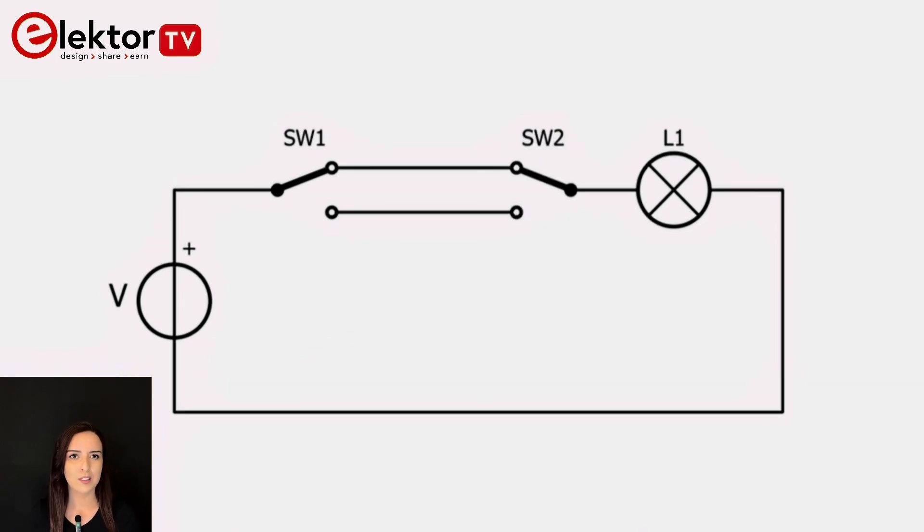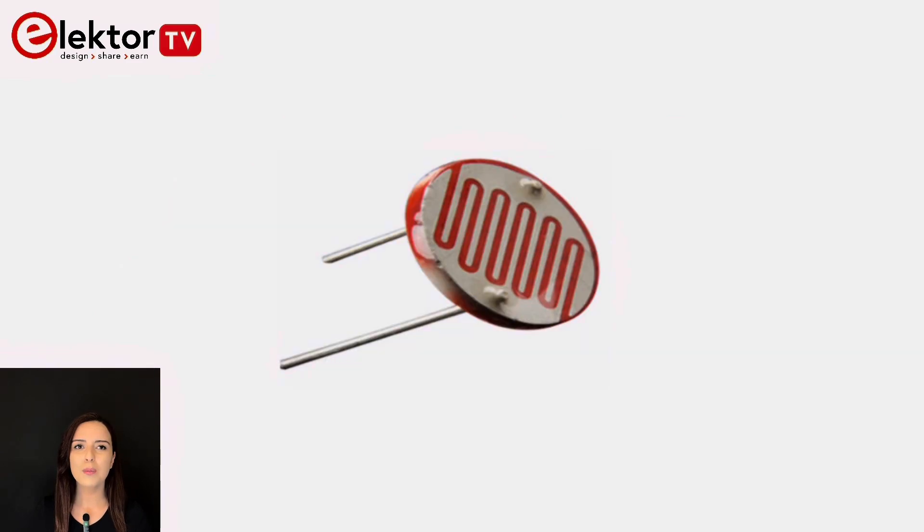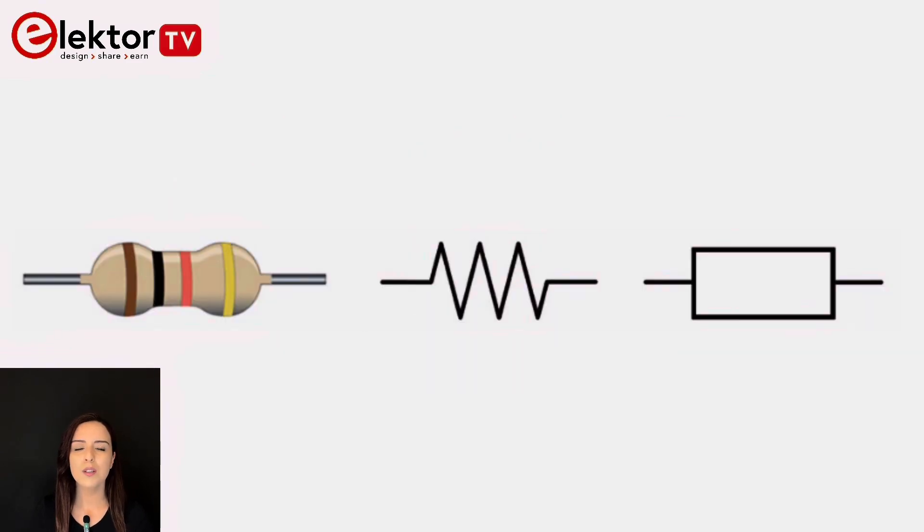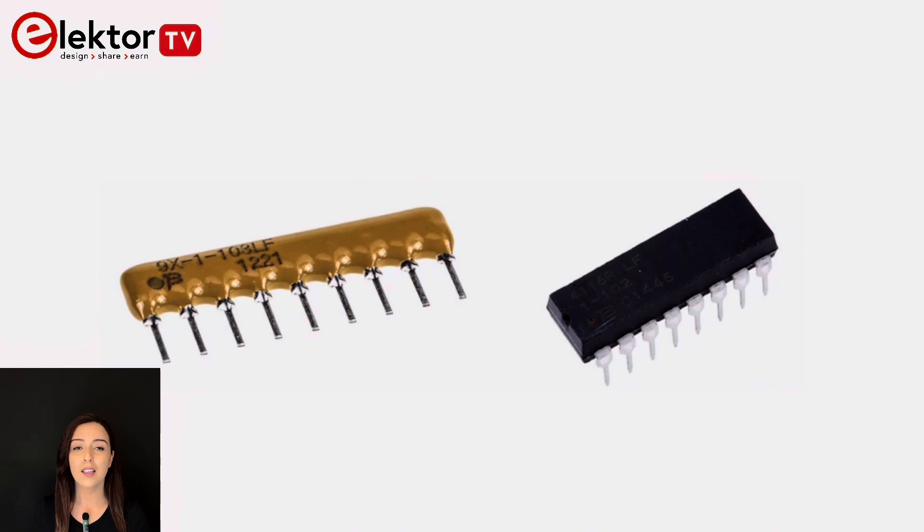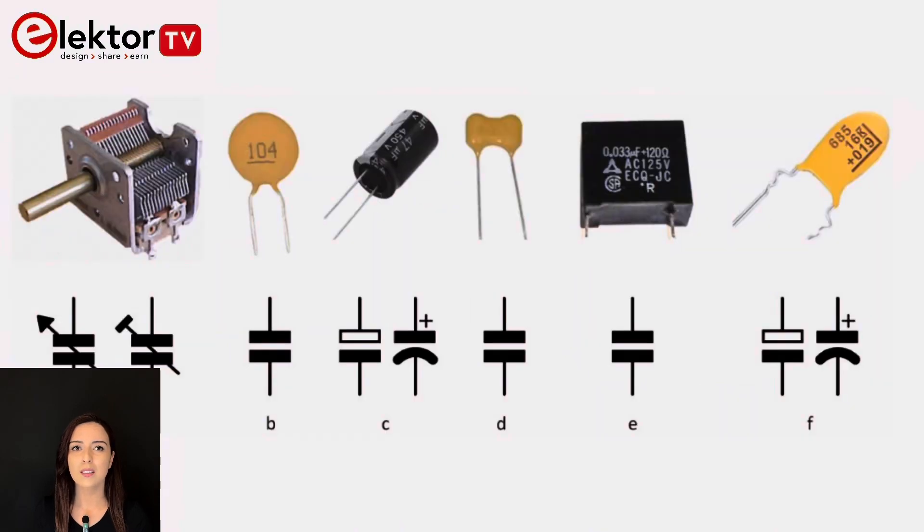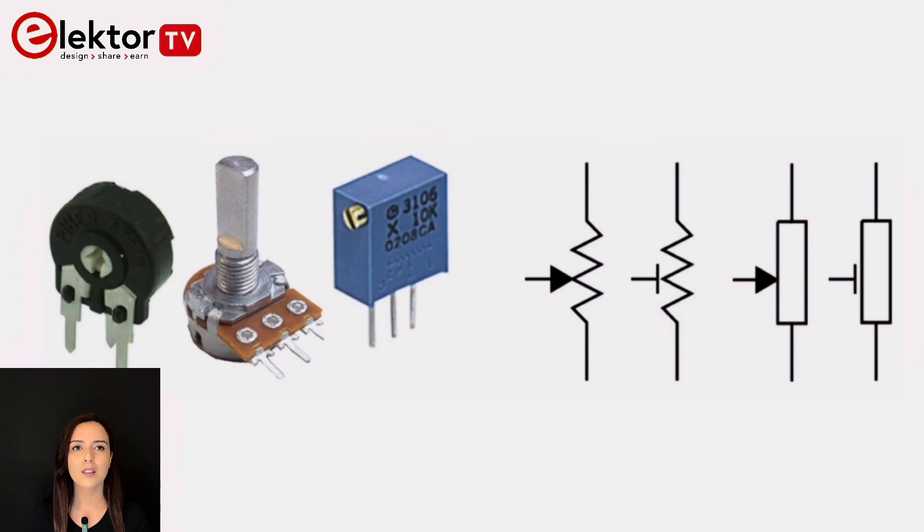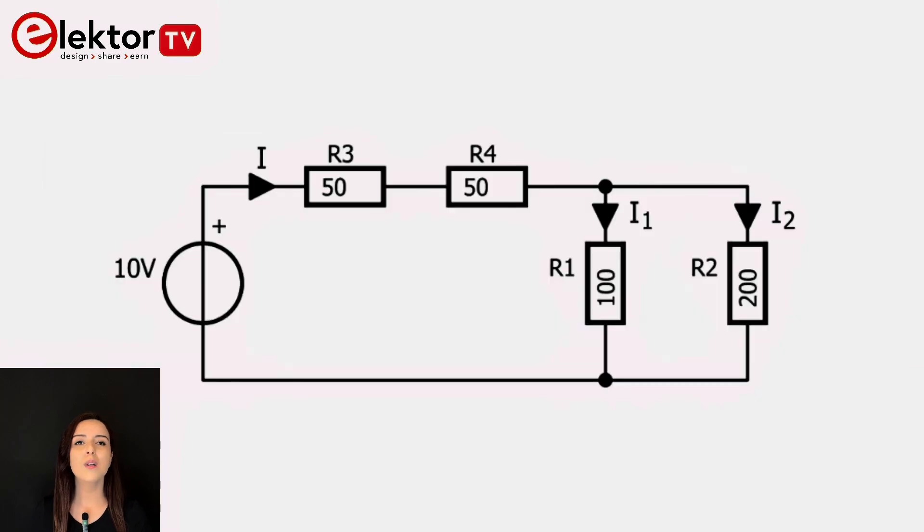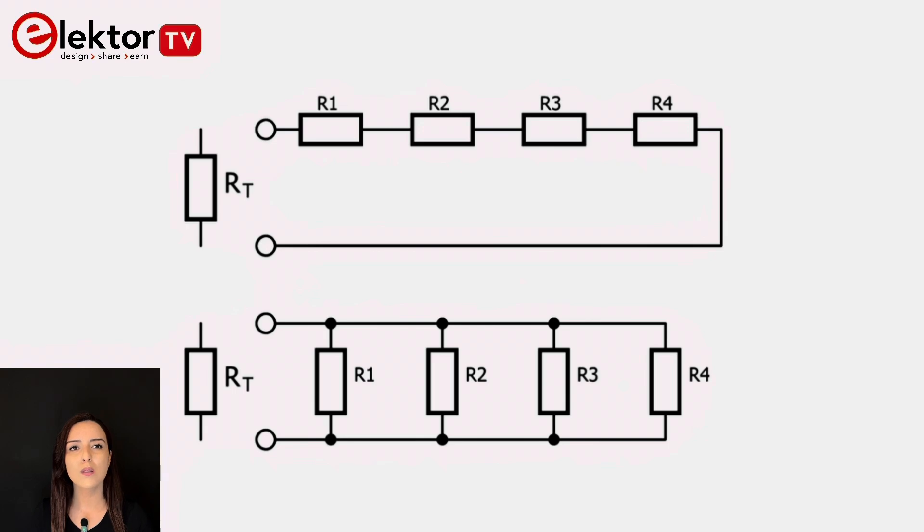In chapter two we will be looking at the most commonly used passive components like resistors, capacitors and inductors and their combinations in electrical circuits. These components do not generate power but can absorb, dissipate or store energy.